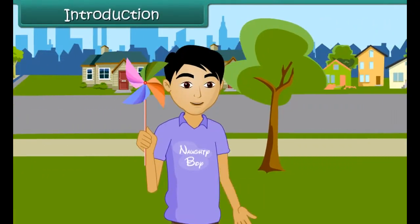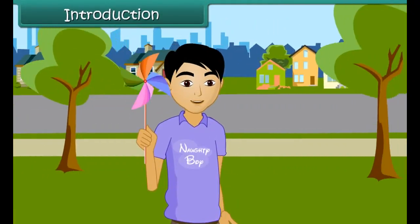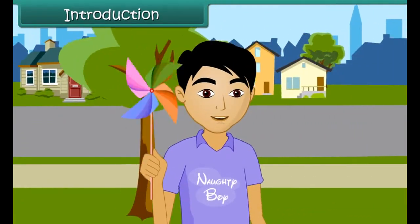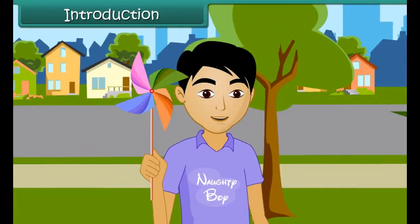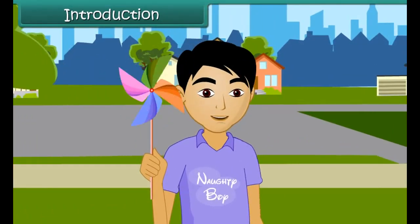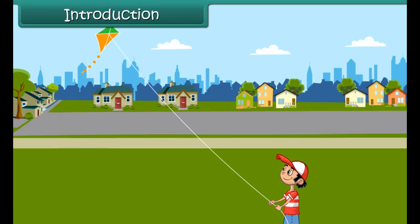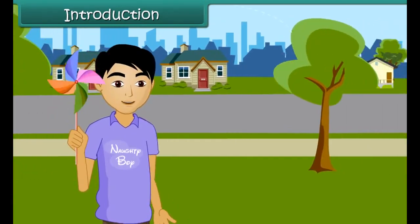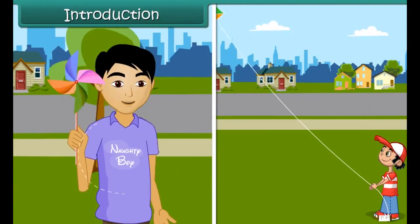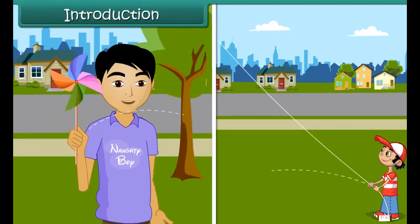Introduction. Rahul has a windmill. Taking the windmill in hand, he starts running. See, the windmill in his hand is moving so fast. How does it happen? See, this boy is flying a kite. The kite flies so high. How does it fly? The windmill moves due to movement of air and so does the kite fly.